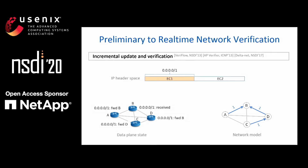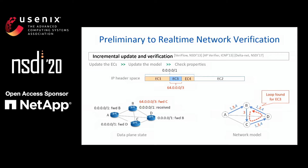When the data plane is updated, before we check the properties, we first need to update the equivalent classes. For example, suppose another rule is inserted which has a different destination IP address, and this IP address intersects with EC1, so we'll split EC1 into three equivalent classes. Then we can update the network model and check properties on that model. Here we can see that EC3 will experience a loop among switches B, C, and D.